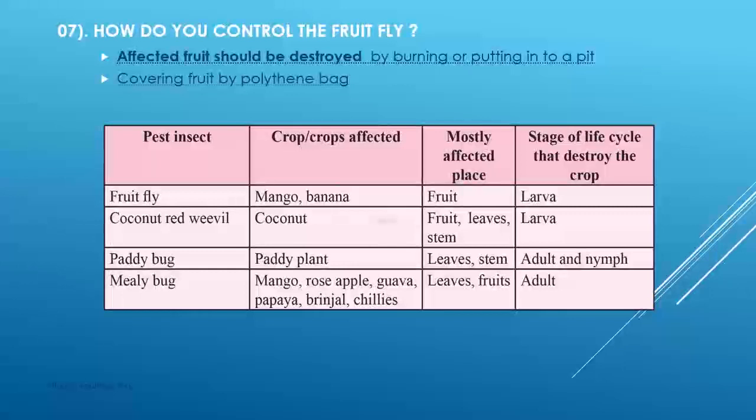How do you control the fruit fly? First method: affected fruits should be destroyed by burning or putting into a pit. Second method: covering fruits with polythene bags. Fruits such as mango and banana are mostly affected by fruit fly.